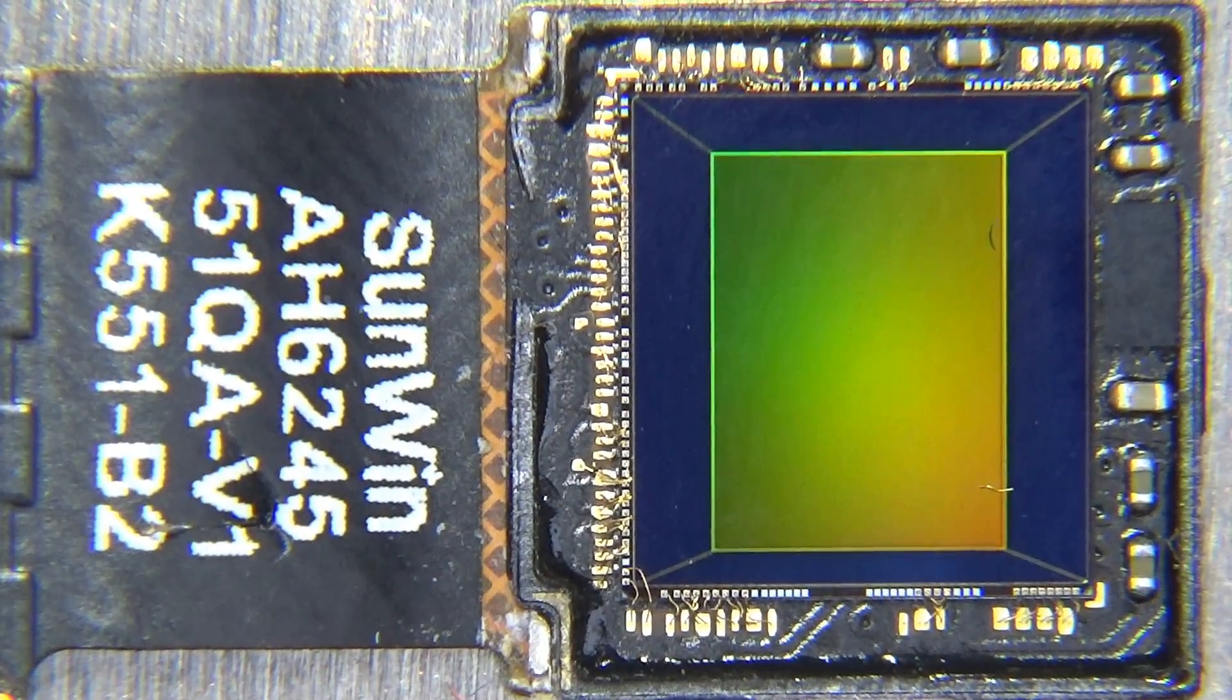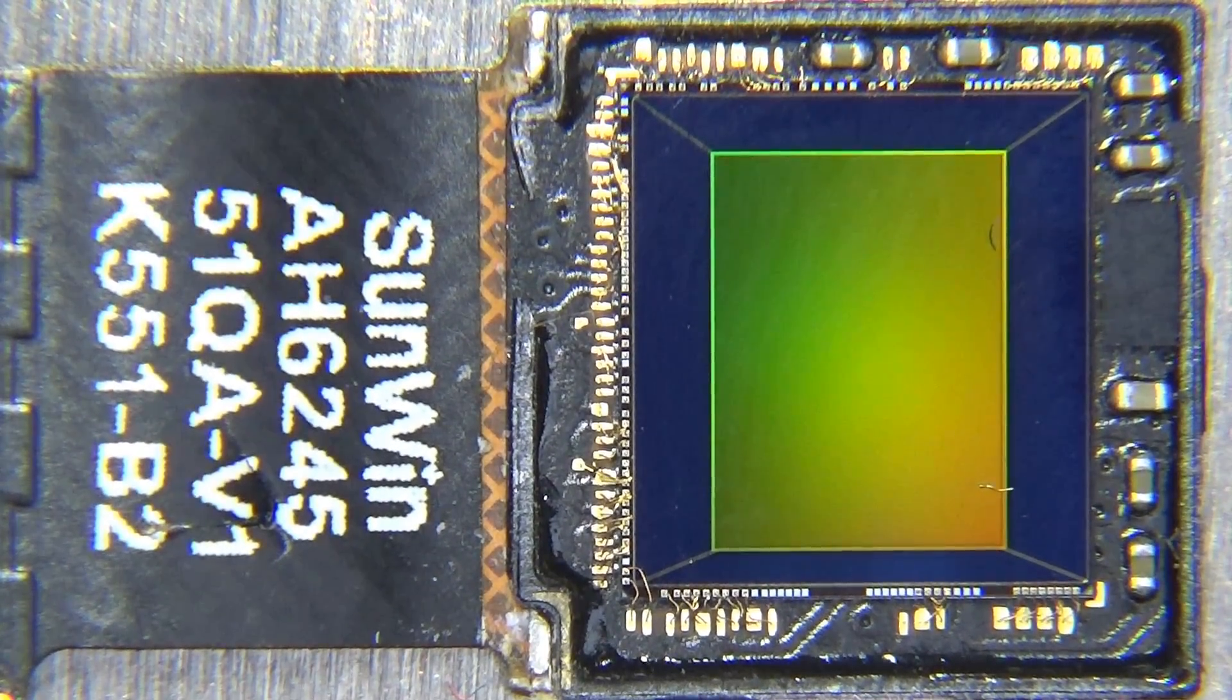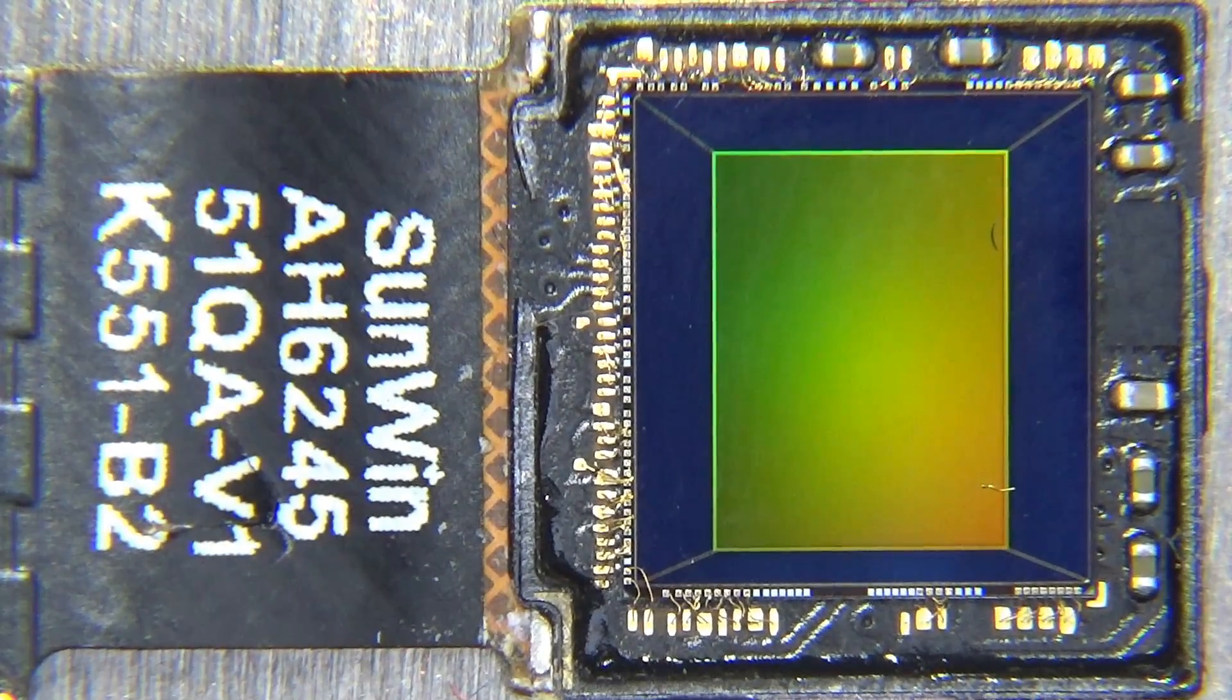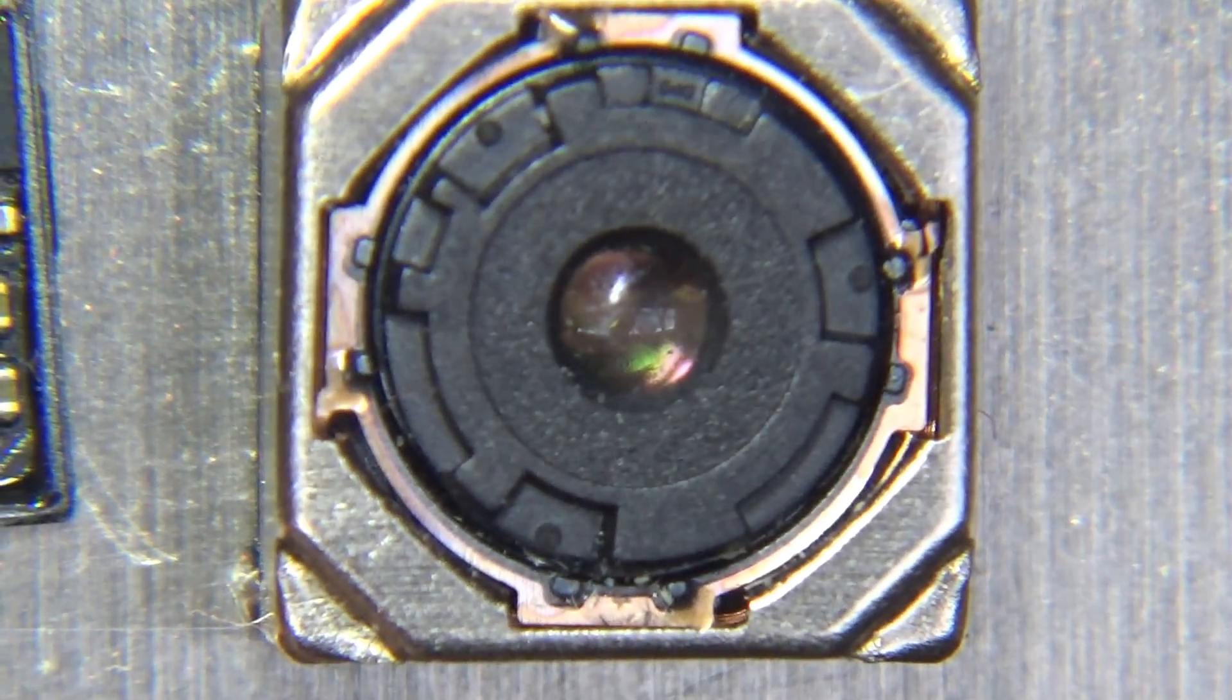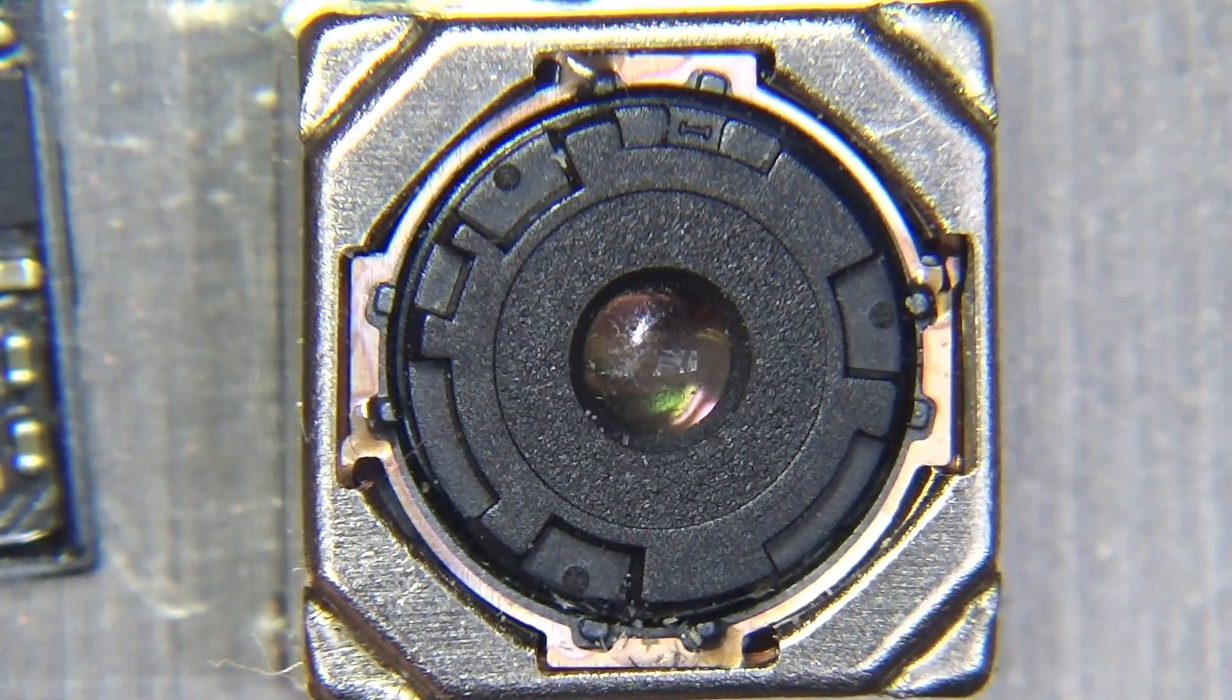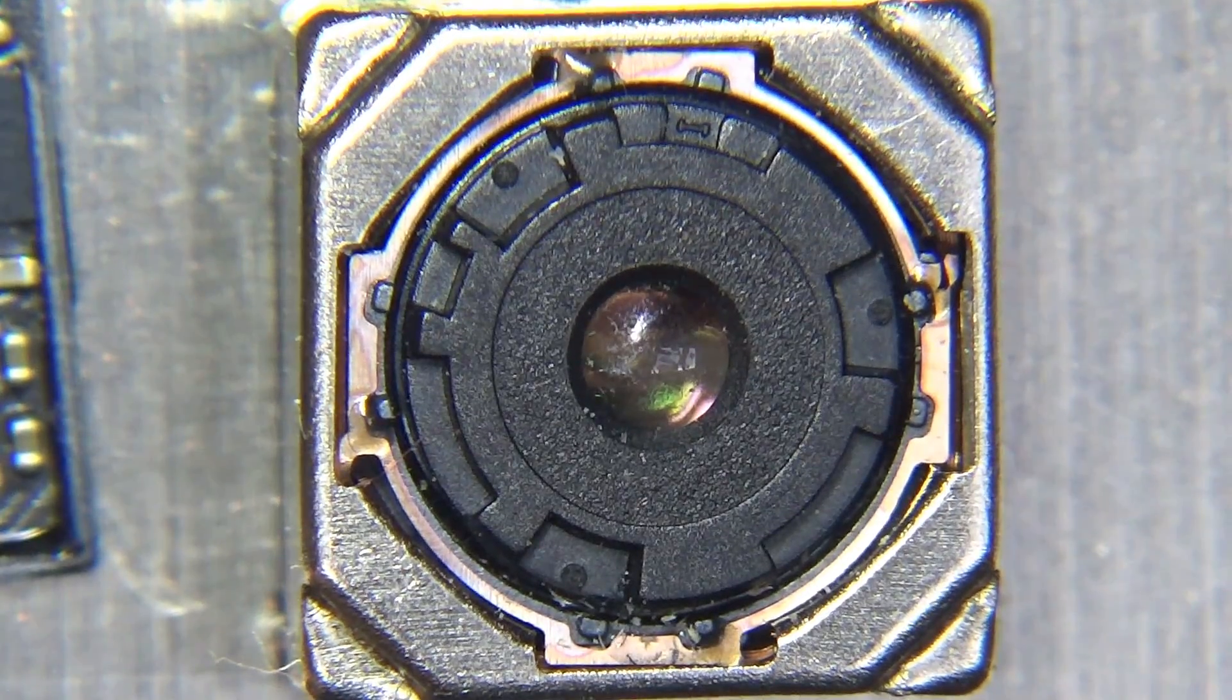Here is the first camera. This is the main camera from the Elephone P8000 and that's the sensor of it and next to it we've got the lens assembly. And this is what we'll be taking apart today to see how it's made and what's inside.